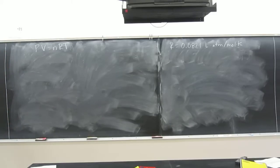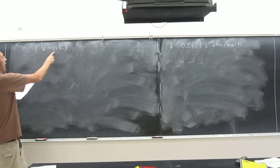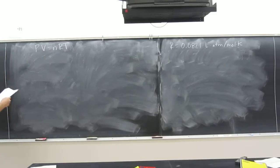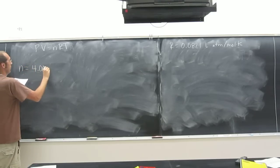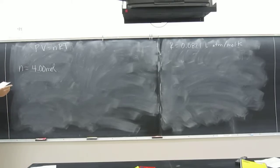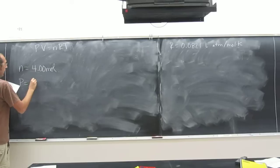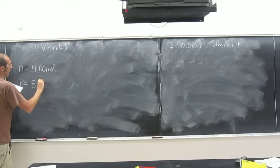So do we know any of these things? P, V, N, or T? Yeah, we definitely know N, right? What is N? 4.00 moles. And what else did we say we know? We know P, right? 8.25 torr.